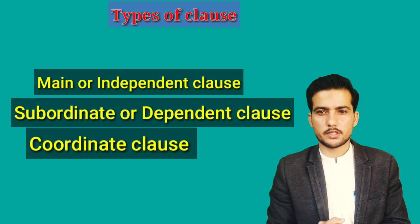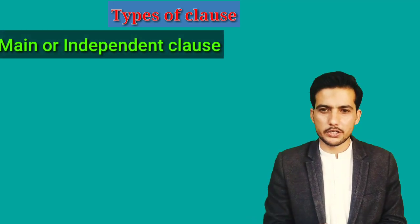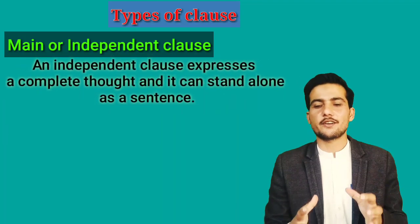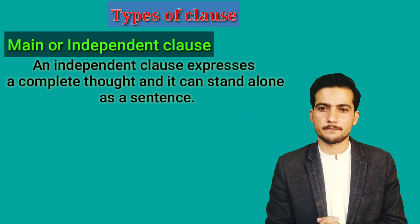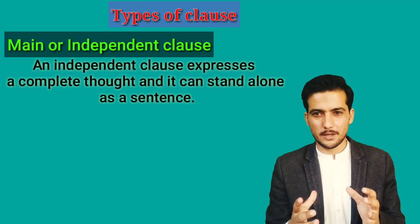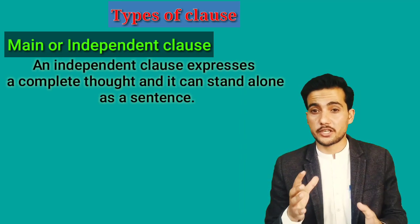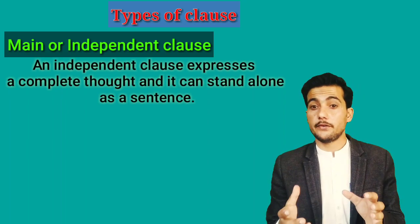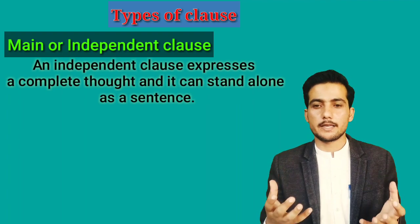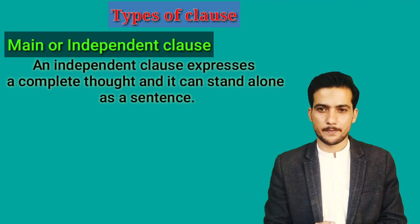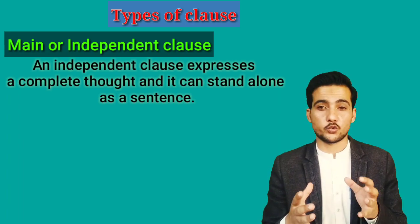Let's discuss them one by one. Main or independent clause: an independent clause expresses a complete thought and it can stand alone as a sentence. So a main or independent clause is one which can stand alone as a sentence — meaning it gives complete sense on its own.